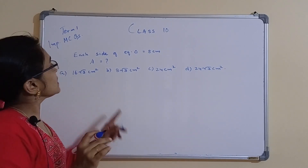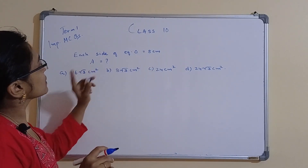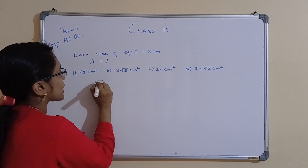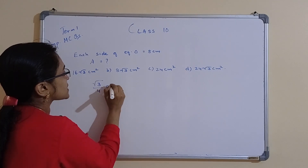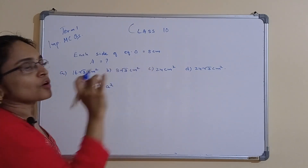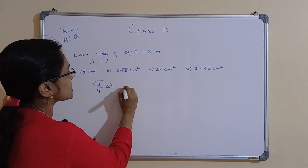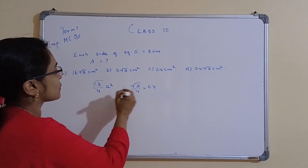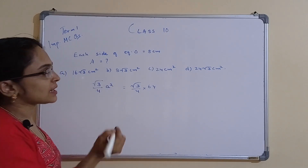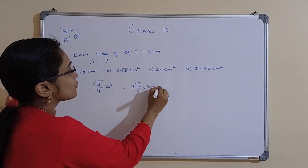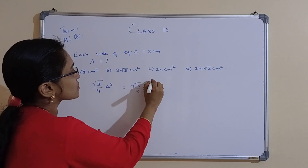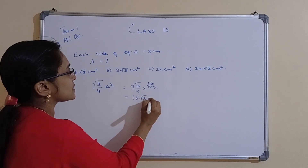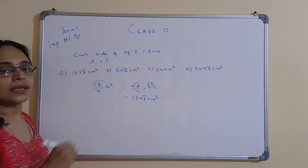Next: each side of an equilateral triangle is 8 cm. Find the area. Area of an equilateral triangle = (√3/4) × a² = (√3/4) × 64 = 16√3 cm². Option A is correct.